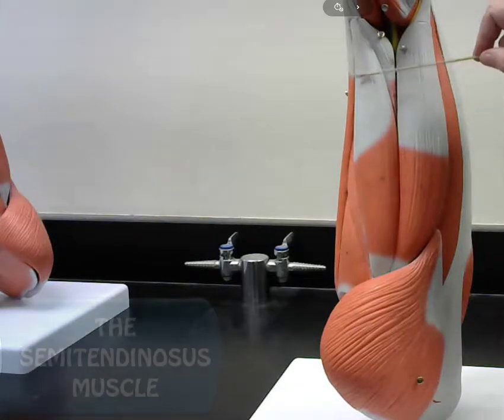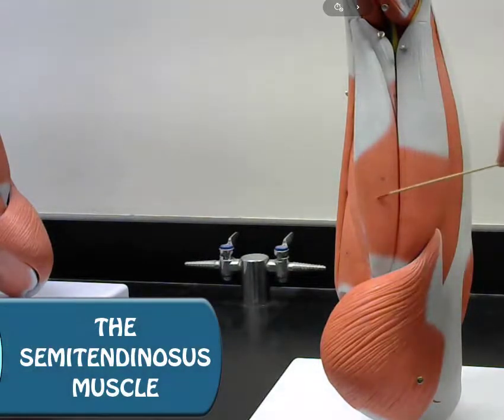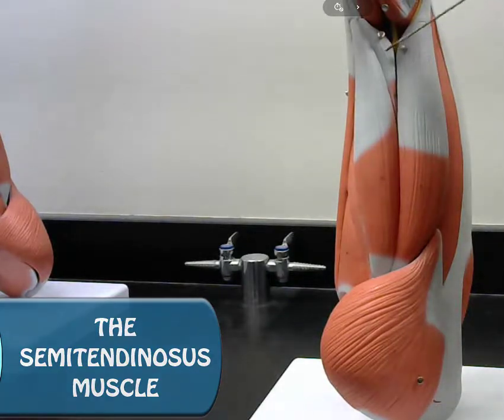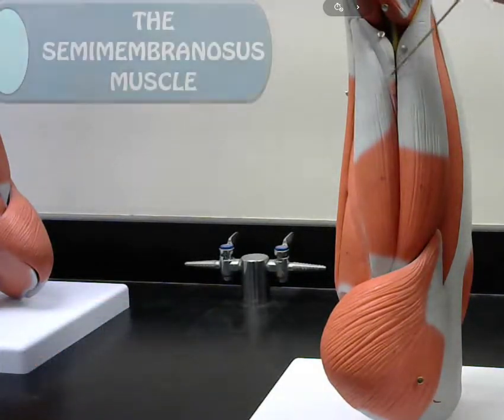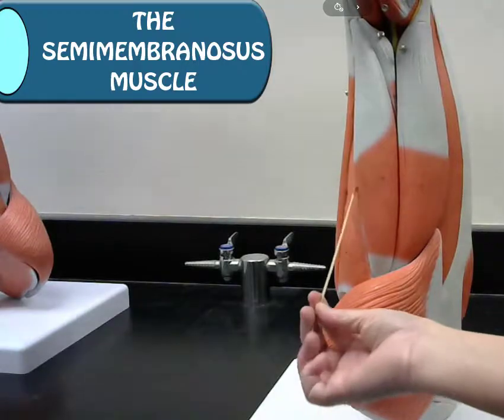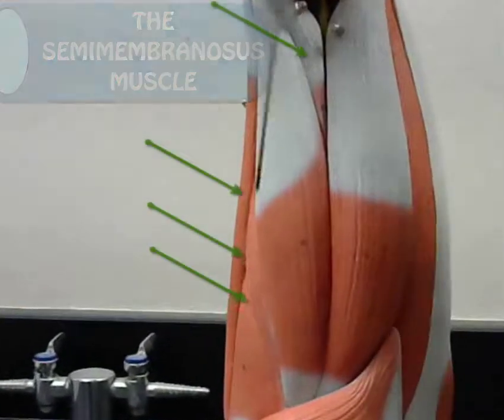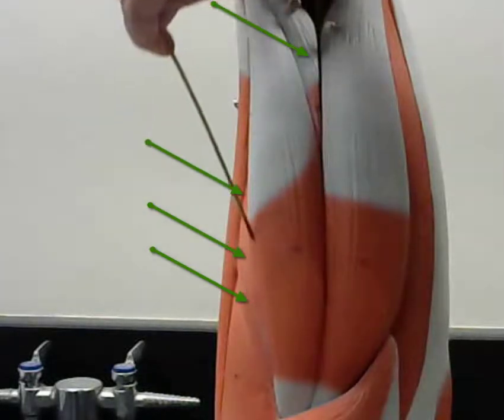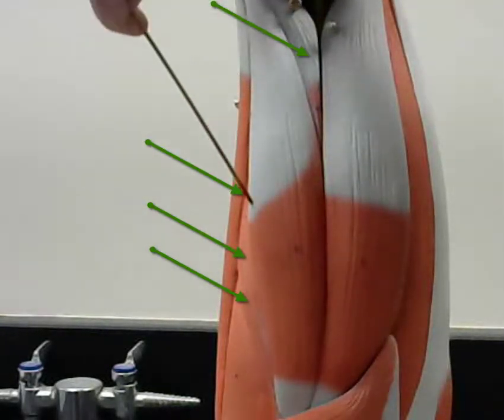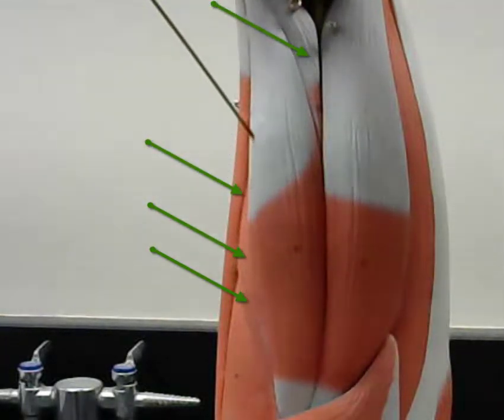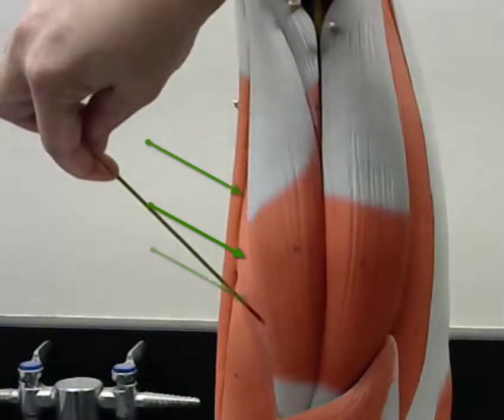This is the semitendinosus. And behind the semitendinosus, we have the semimembranosus, which you can see a part of it here. And also a part of it right there. Right there. That's the semimembranosus.